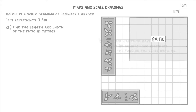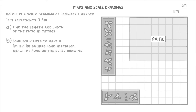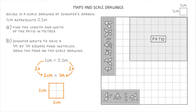Let's have a go at part B before we finish. This one says that Jennifer wants to have a 1 metre by 1 metre square pond installed, and we need to draw the pond onto the scale drawing. This is kind of the opposite of part A — this time we're converting from real-life values of 1 metre by 1 metre to the scale drawing values. So if 1 centimetre is 0.5 metres, and our pond has a side length of 1 metre, that's 2 times bigger, so on our drawing it'll be 2 centimetres. Which means we just need to draw a 2 centimetre by 2 centimetre square somewhere on the diagram — for example, down here or over here. It doesn't really matter where; you just need to place it and then label it pond.